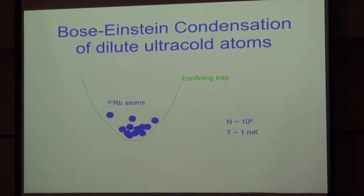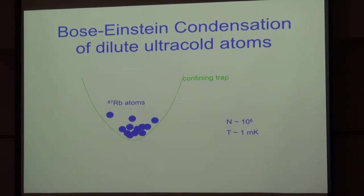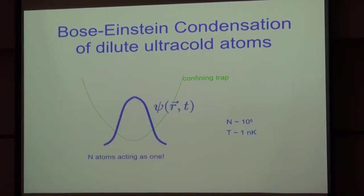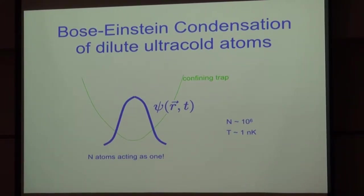Bose-Einstein condensation of dilute, ultra-cold atoms — imagine a confining trap. You've got some atoms running around. Let's imagine rubidium because it's our favorite. Let's imagine we only have a million of them, though you could have many more. If they're at a fairly high temperature, they're just regular old atoms. One way of thinking about Bose-Einstein condensation is that a significant number of the atoms are all in the same quantum mechanical state. I'm going to be treating the many-body wave function psi of position and time as the thing we need to study about Bose-Einstein condensates.